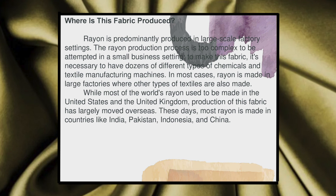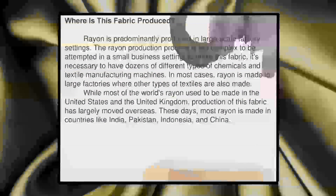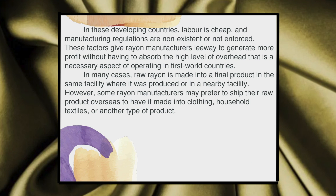Rayon is produced in large-scale factory settings. The rayon production process is too complex to be attempted in small business settings. It is necessary to have dozens of different types of chemicals and textile manufacturing machines. In most cases, rayon is made in large factories where other types of textiles are also made. While most of the world's rayon used to be made in the United States and United Kingdom, production of this fabric has largely moved overseas. These days, most rayon is made in countries like India, Pakistan, Indonesia, and China. In these developing countries, labour is cheap and manufacturing regulations are non-existent or not enforced. In many cases, raw rayon is made into a final product in the same facility where it was produced or in a nearby facility.